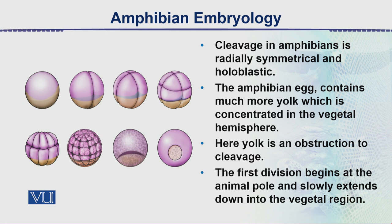In this diagram we see the first stage — there is a fertilized egg. The upper half is the animal pole and the lower half is the vegetal pole. The third cleavage appears at right angles to the first, and the third cleavage is equatorial.